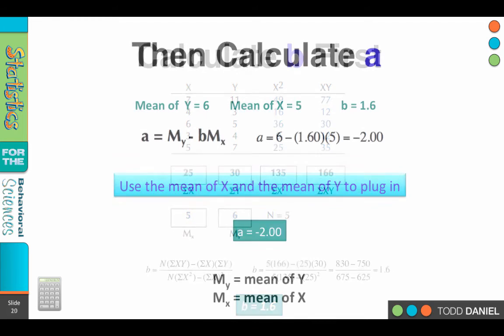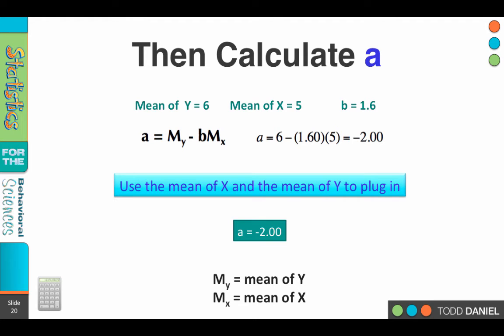Once we have our b value, we can plug that into the equation and we can solve for a. We need the mean of y, the mean of x, and the b value that we just calculated. It's 1.6. We're going to back solve for a, so that would be the mean of y minus b times the mean of x, or 6 minus 1.6, the b value, times 5, the mean of x. So 1.6 times 5 is 8, 6 minus 8, negative 2. So we have now an a value of negative 2.